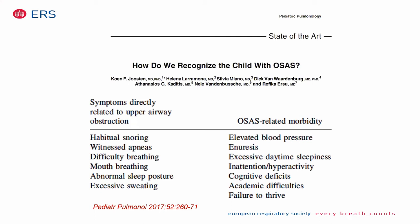With the European Respiratory Society Task Force, we developed papers published in the ERJ and Pediatric Pulmonology. The first paper looked at how we can recognize a child with OSA. Children may have symptoms directly related to upper airway obstruction — snoring, apneas, difficulty breathing, mouth breathing — or symptoms related to OSA morbidity such as elevated blood pressure, enuresis, daytime sleepiness, inattention, hyperactivity, and cognitive deficits.